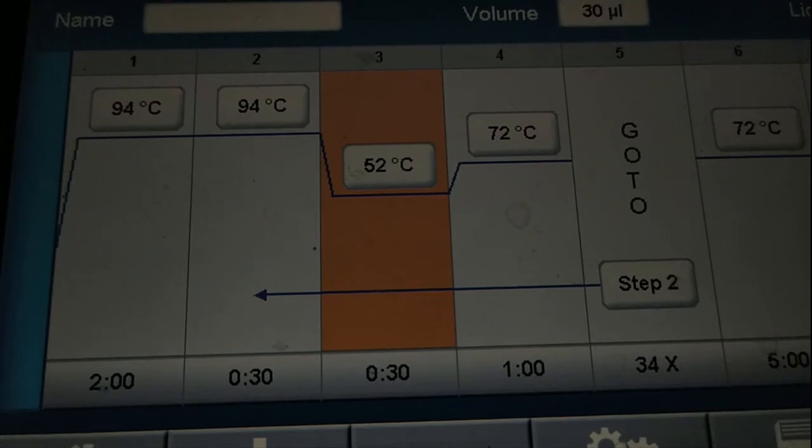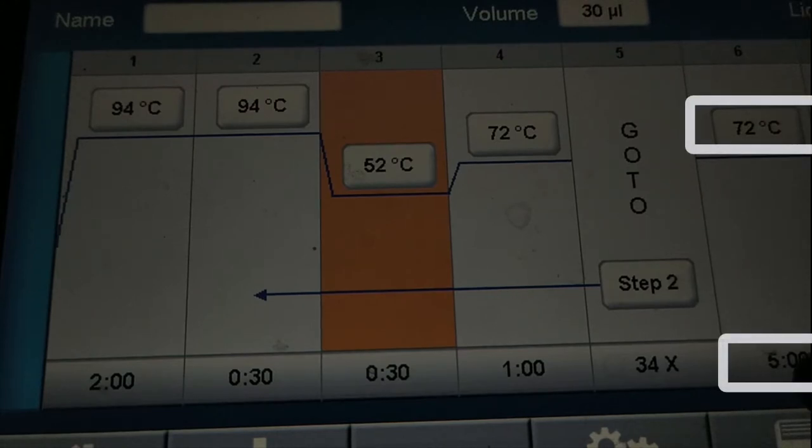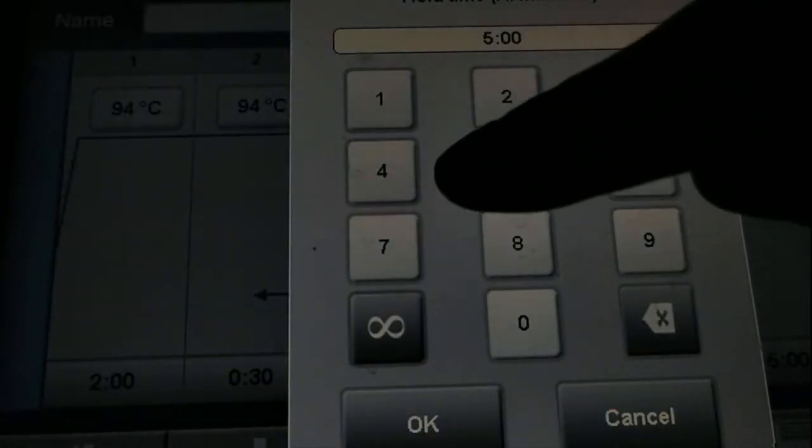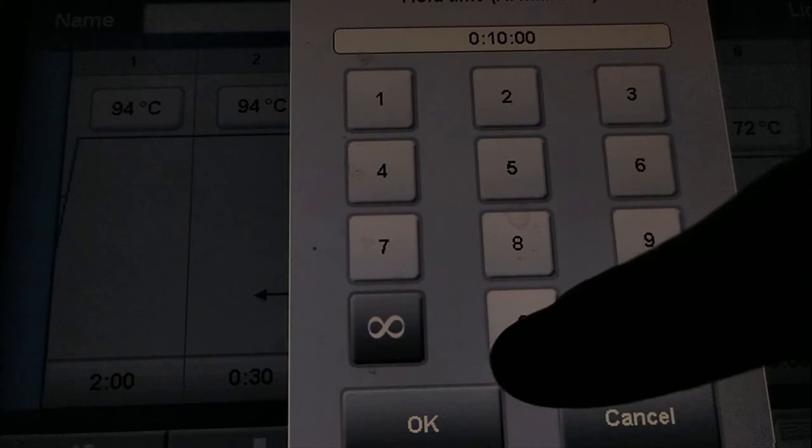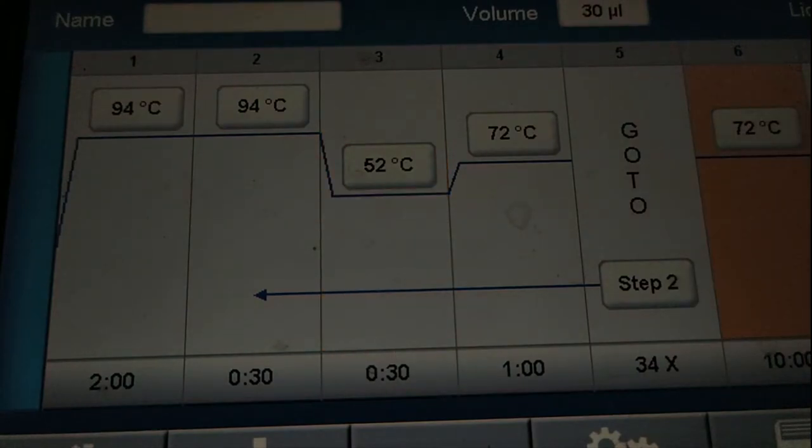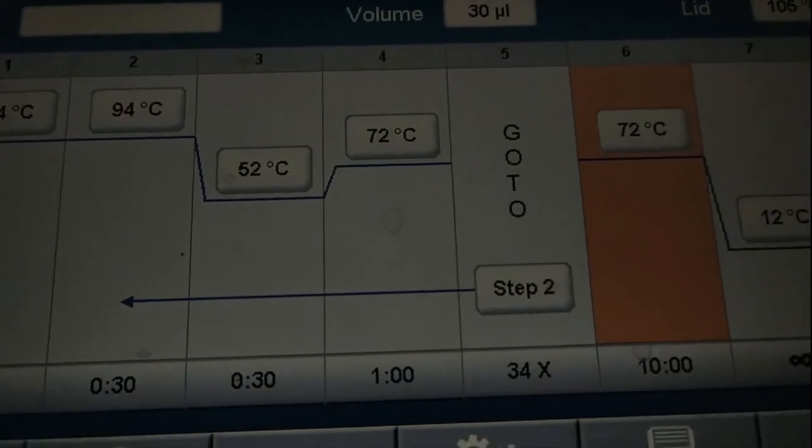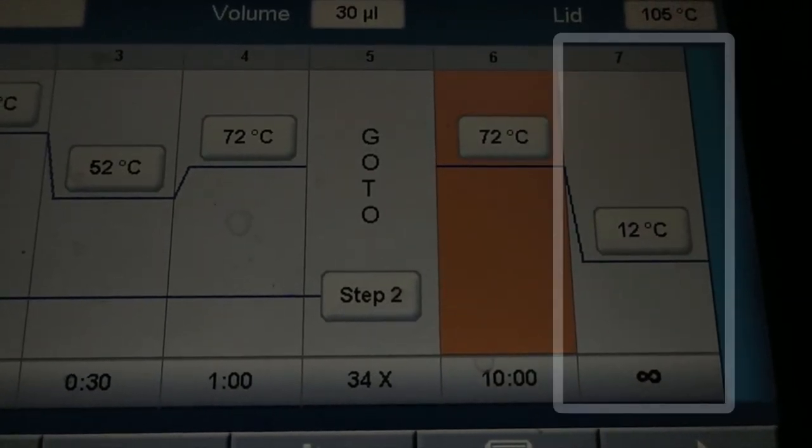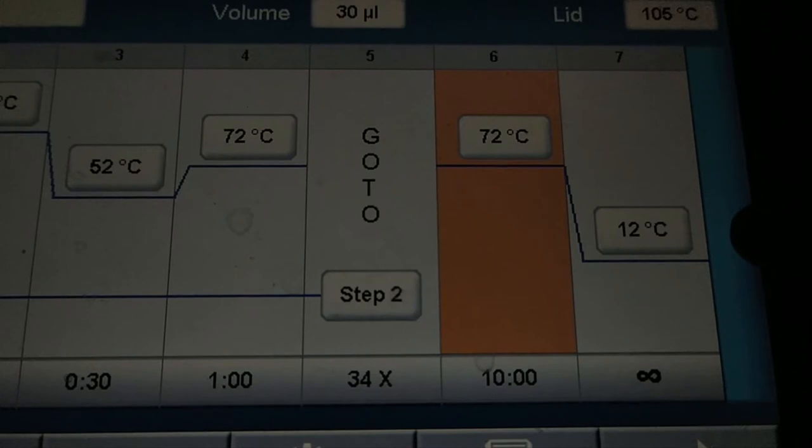Then we have the final extension step and it is set to 72 Celsius degrees for 10 minutes. So press on the time here and set 10 minutes. Then press OK. And finally we have the last step and this step is 12 Celsius degrees to keep our samples for eternal period of time and it is to save our samples from degradation.